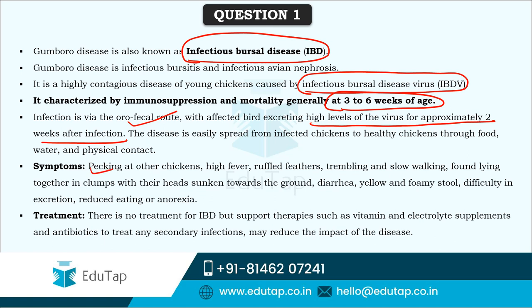Symptoms of IBD include pecking at other chickens, high fever, ruffled feathers, trembling and slow walking. Birds are sometimes found lying together in clumps with their heads sunken towards the ground. Diarrhea can also be observed, along with yellow and foamy stool, difficulty in excretion, and even reduced eating or anorexia.